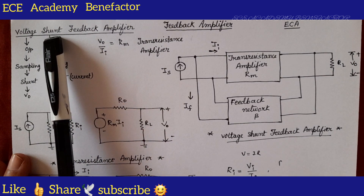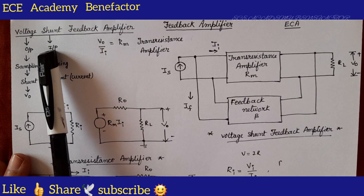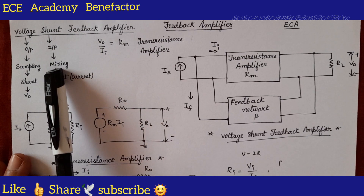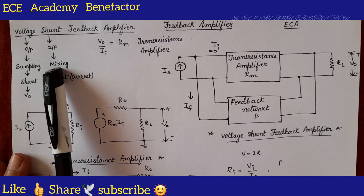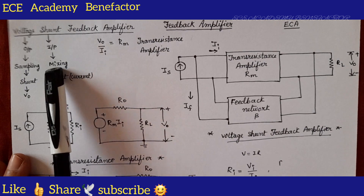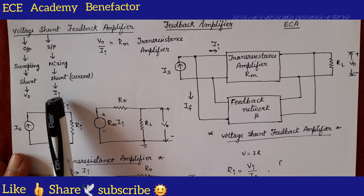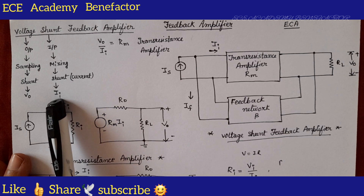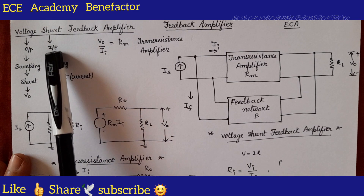The second word is 'shunt'. The second word tells about the input. At the input side we do mixing. Output side: sampling; input side: mixing. If shunt mixing is done, the parameter mixed is I-i, which is current. We have to place a current source at the input side for shunt input mixing.